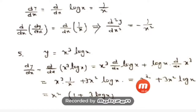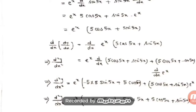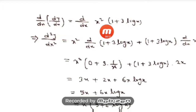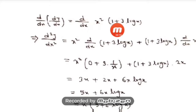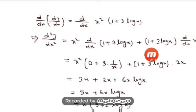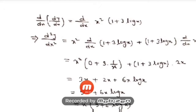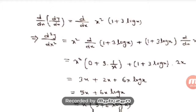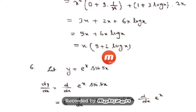Now differentiate x²(1 + 3·log x) again using the product rule: d²y/dx² = x²·d/dx(1 + 3·log x) + (1 + 3·log x)·d/dx(x²). We get x²·(3/x) + (1 + 3·log x)·2x = 3x + 2x + 6x·log x = 5x + 6x·log x. Taking x common: d²y/dx² = x(5 + 6·log x).